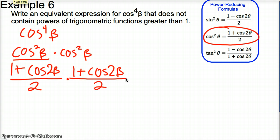That way is the same as cosine to the fourth. Now I can use my formula and replace with 1 plus cosine of 2 beta over 2. Both of those powers of cosine squared beta get replaced with this.